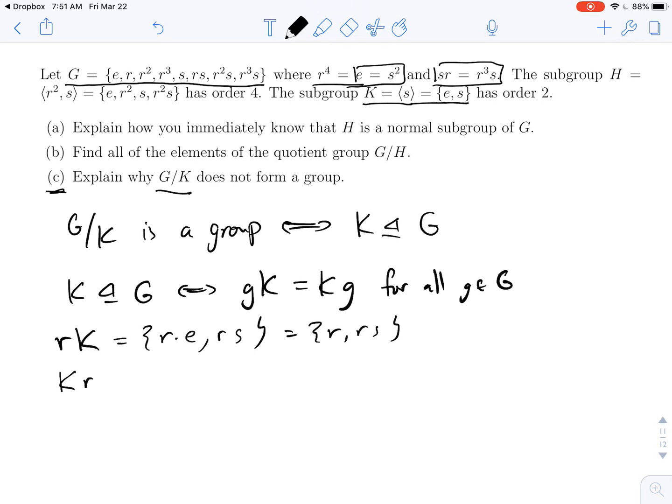Now let's look at the right coset KR. So this will be E times R and S times R. Well, E times R is R, but now for S times R, we need to go back to the top here. S times R is R cubed S.